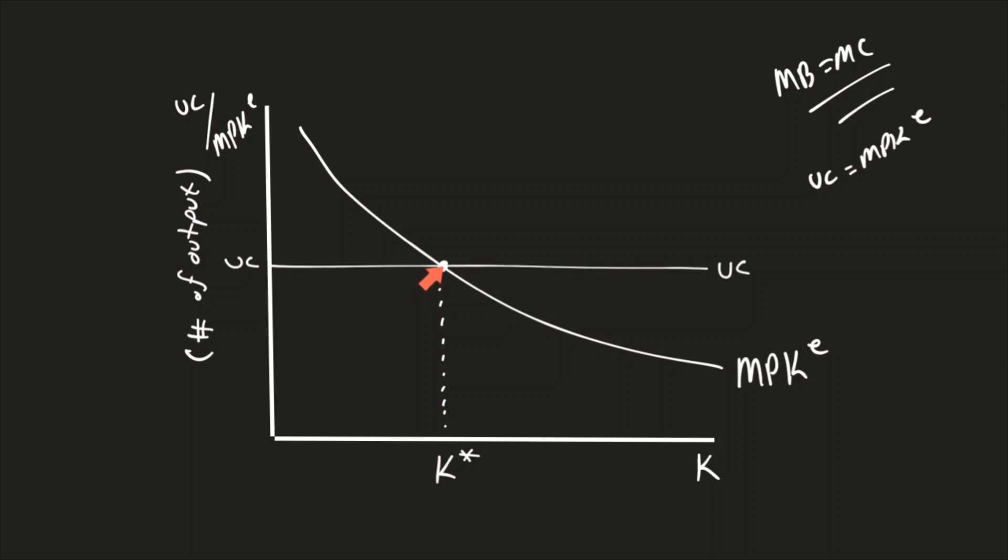What happens if we are at a different point? Let's say this is K prime. What do we know at K prime? We see that the user cost of capital is greater than the marginal product of capital.